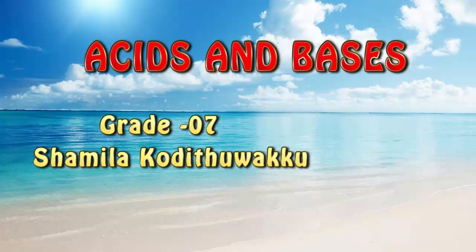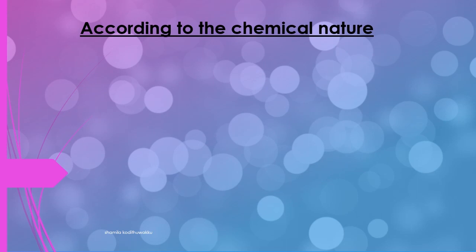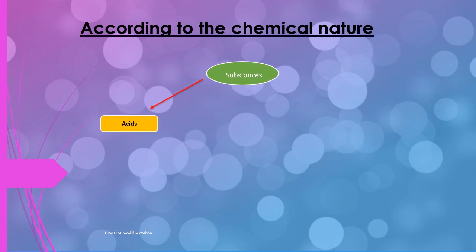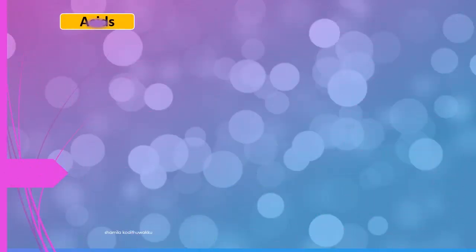Acid and Bases. According to the chemical nature, substances can be divided into three parts: Acids, Bases, and Neutral Substances.